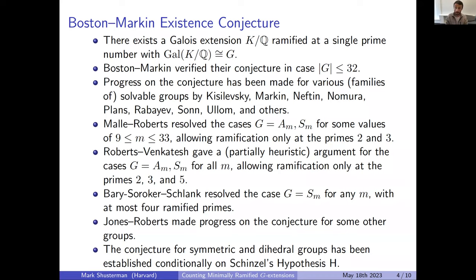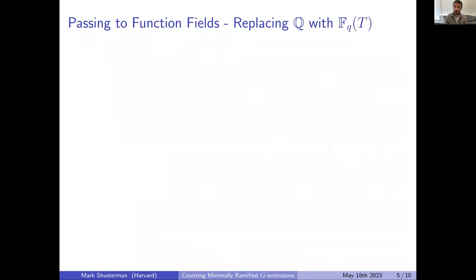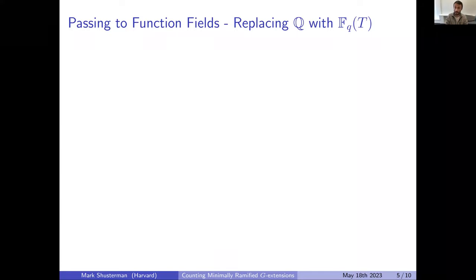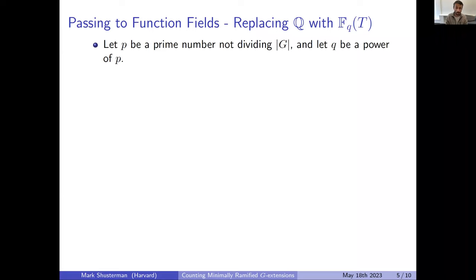Now we look at the analog over a function field, replacing the rational numbers by a rational function field over a finite field F_q. A lot of what we said translates basically word for word. To fix ideas, I'll take a prime not dividing the order of the group and work in characteristic coprime to the order of G. This is a little easier and I'll address this case first, though of course you could also study the harder case where p divides the order of the group.